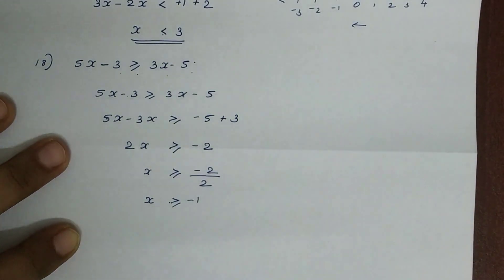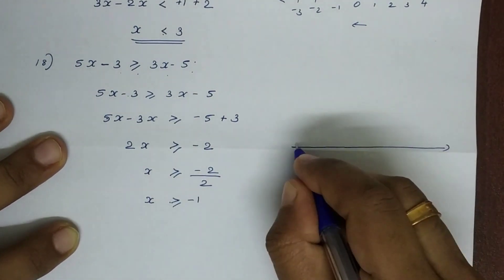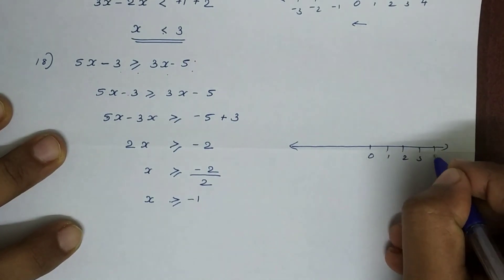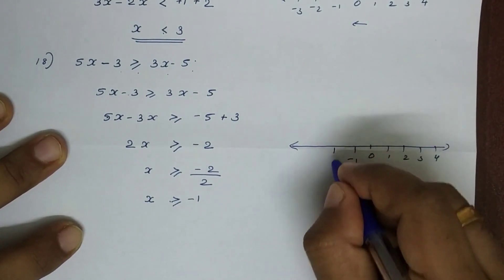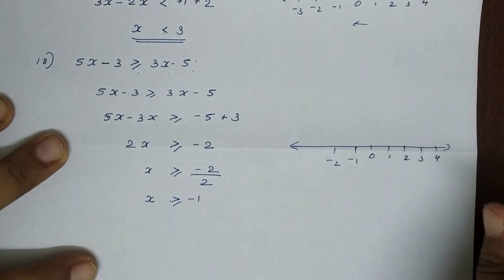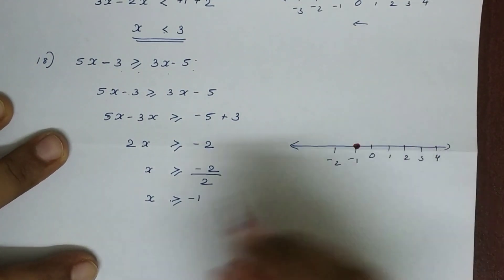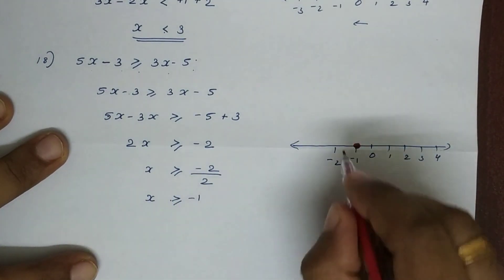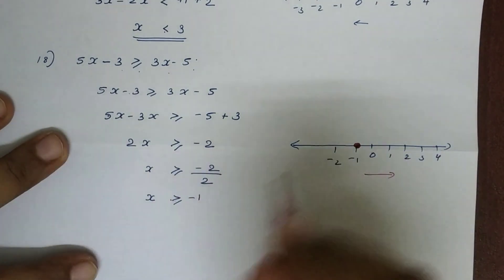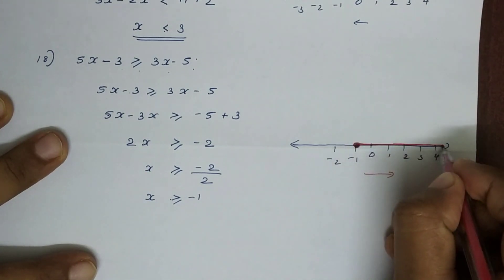So minus 1 is the solution. On the number line we have 0, 1, 2, 3, 4 and minus 1, minus 2. Minus 1 is equal to 1 unit from zero. Since x is greater than or equal to minus 1, we shade the right side of the graph from minus 1. This is the graph for problem 18.